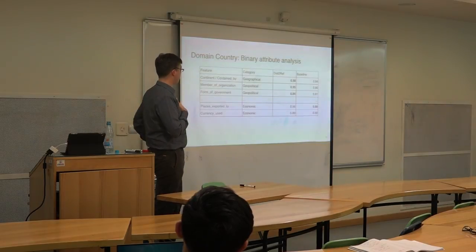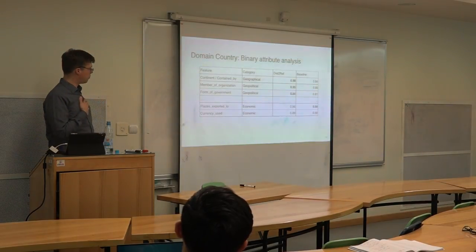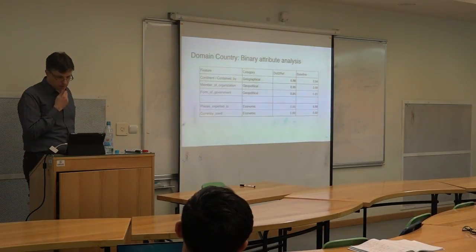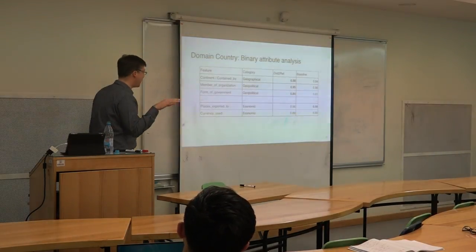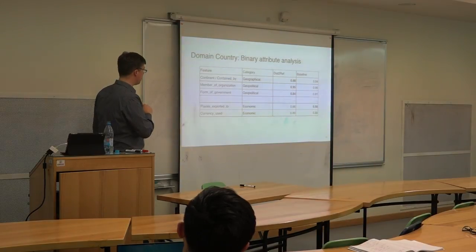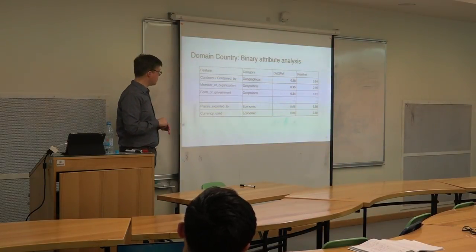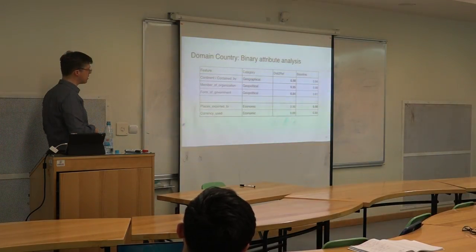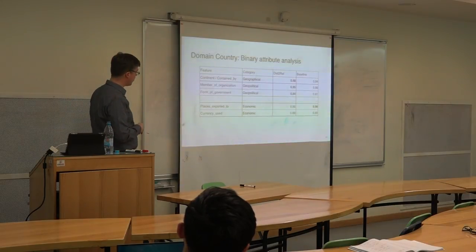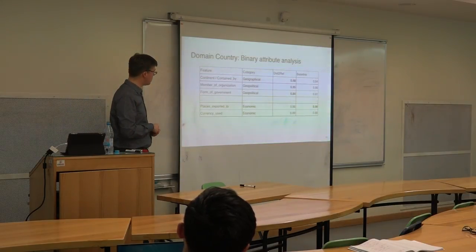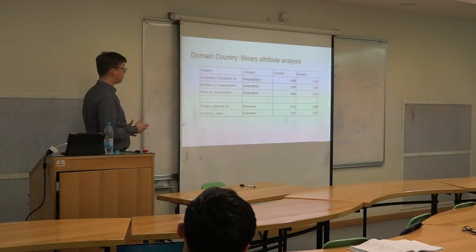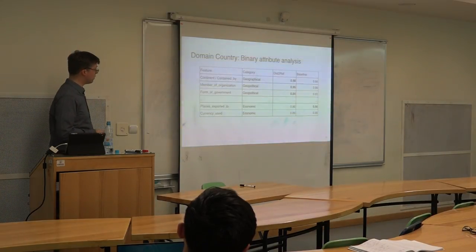These are things that are not learned relatively well: places exported to, currency used. The problem with currency use is that essentially every country has its own currency, so that's not something that comes out very well in the distributional vectors, because it's very scattered information. And places exported to is a very fine-grained aspect of knowledge about a country that's also difficult to grasp.